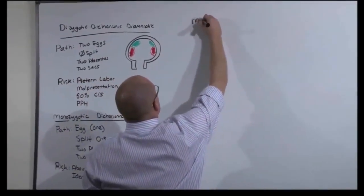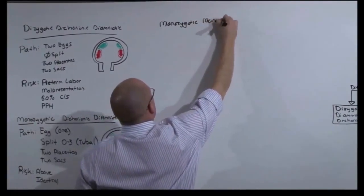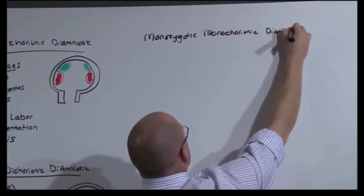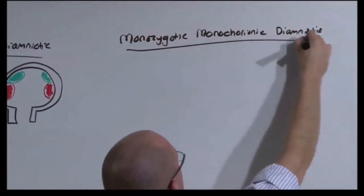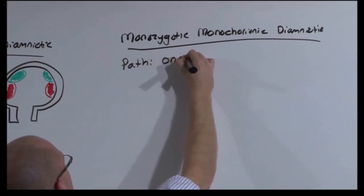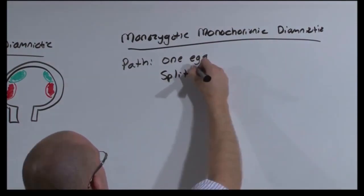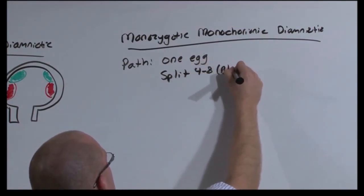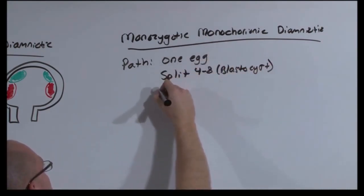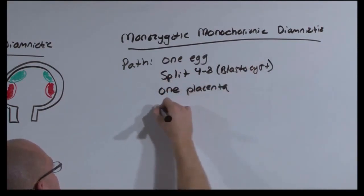As we get the twins closer together, we stick with the monozygotic and we move to a monochorionic, diamniotic. This, of course, is caused by one egg, because they have identical genetic material, that's split generally between days four and eight in the blastocyst phase. They have one chorion, so they have one placenta, and two amnions, so two sacs.